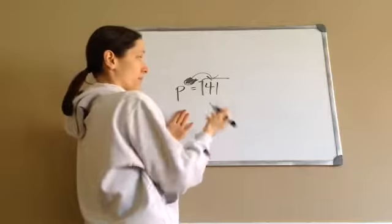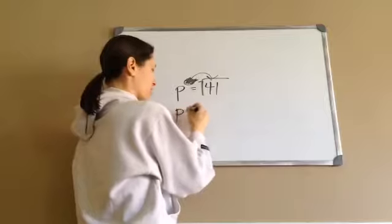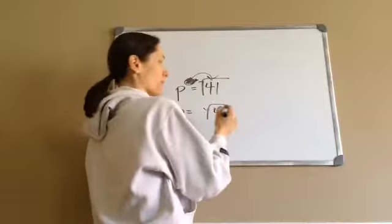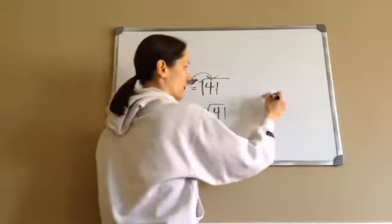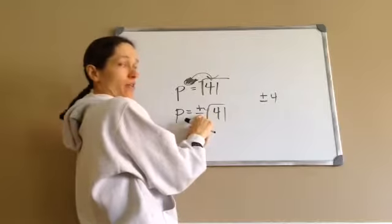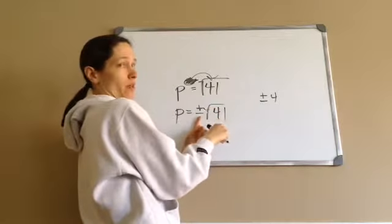Okay? And I can't figure out what times what equals 41. So my answer is square root of 41. But again, just like the plus and negative 4, the plus and the negative 41. So this goes on the outside, just so you know. Plus and negative square root of 41. See that?